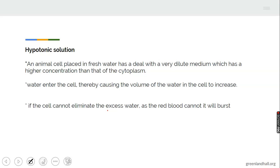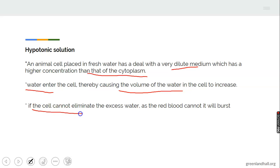Hypotonic solution is a solution where the solute and solvent concentrations differ. An animal placed in a hypotonic solution — a very dilute medium which has higher concentration than that of the cytoplasm — will have water enter the cell, thereby making the volume of water increase. As a result, the cell will increase in size. If the cell cannot eliminate the water, the red blood cell will burst.